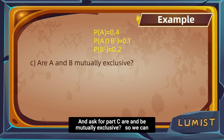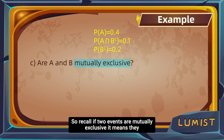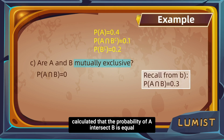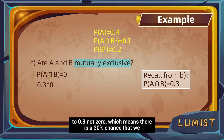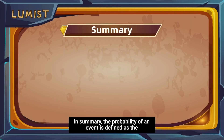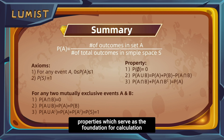For part C: are A and B mutually exclusive? For mutual exclusivity, the probability of their intersection must equal 0. But we calculated P(A∩B) = 0.3, meaning there is a 30% chance both A and B happen. Therefore, A and B are not mutually exclusive. In summary, the probability of an event is defined as the ratio of outcomes satisfying that event to the total outcomes in the sample space. There are two axioms of probability and several important properties that serve as the foundation for calculation-based problems. Master these and you're well on your way.